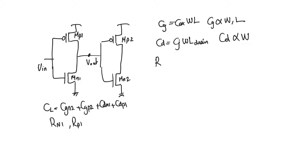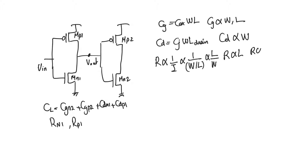The resistance, whether R_N or R_P, is inversely proportional to current I — it equals V_DD over 4·I_sat. Since I is proportional to W/L, resistance is inversely proportional to W/L: directly proportional to L and inversely proportional to W. This makes complete sense because resistance increases with length and decreases with width, and here W and L are the width and length of the channel.